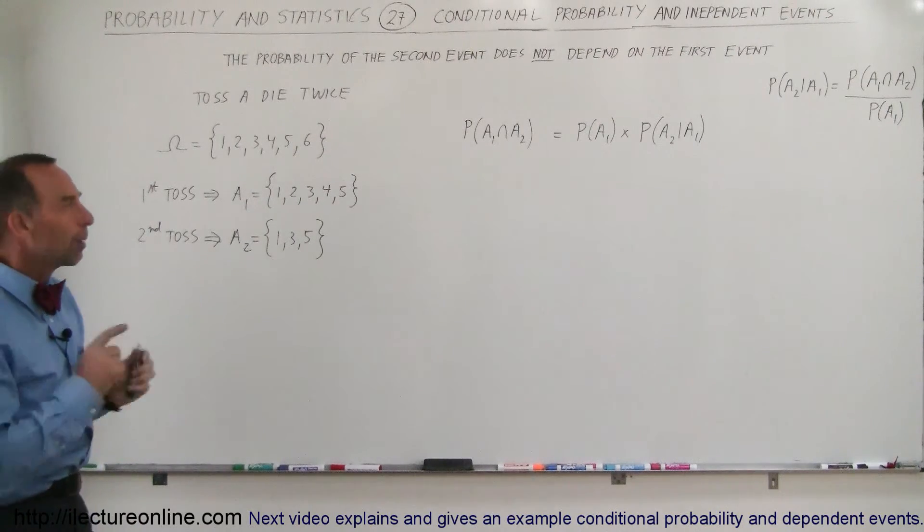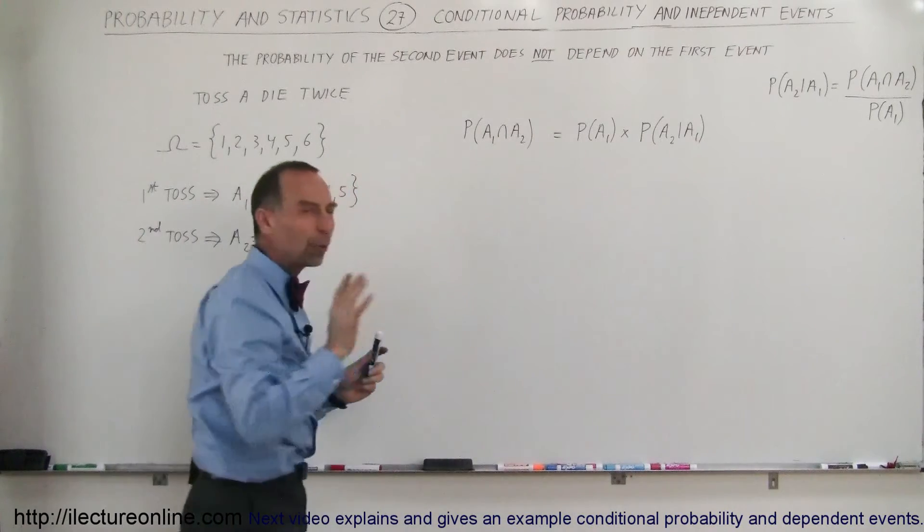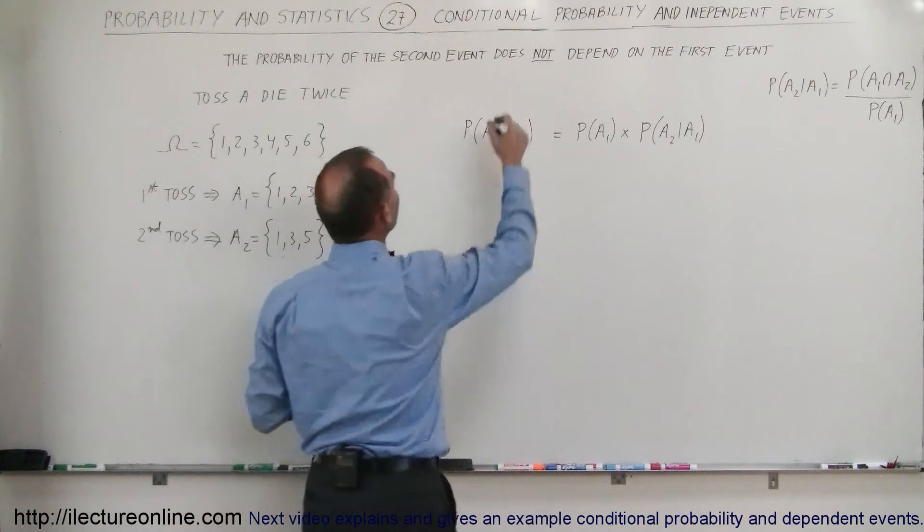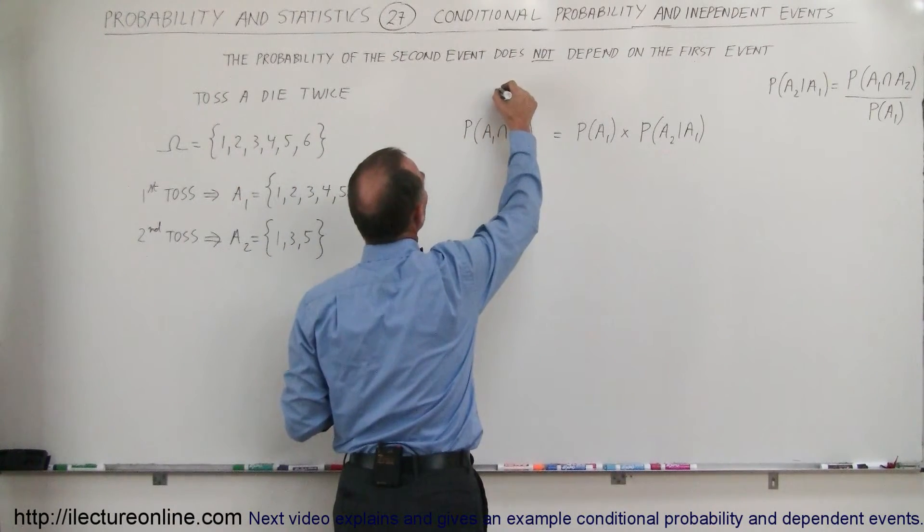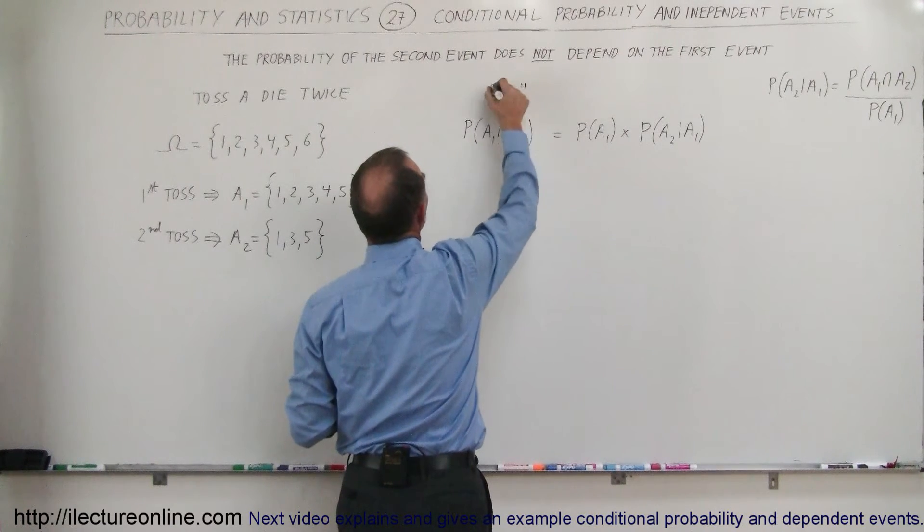So here what we're trying to find is the probability of A1 intersected with A2. But a better way to look at it is the probability that event 1 and event 2 will, or A1 and A2 will occur. So let's use the word AND here.